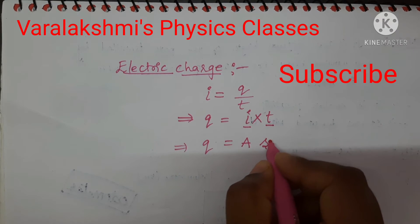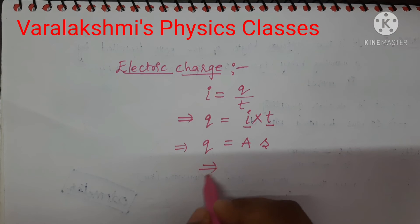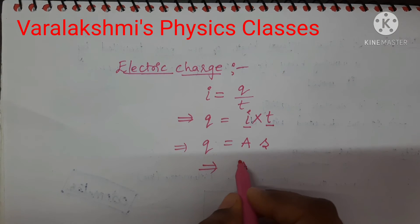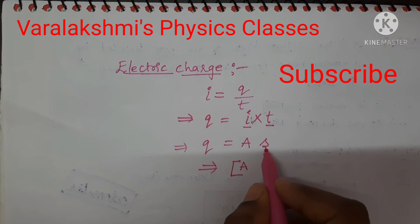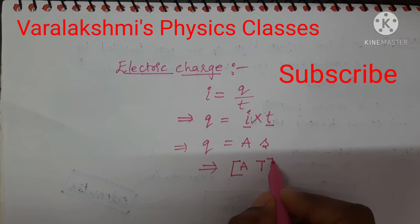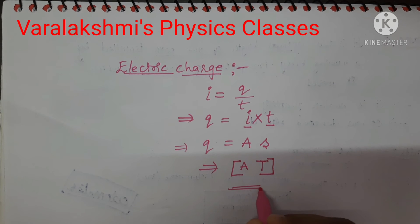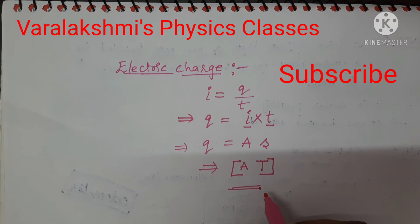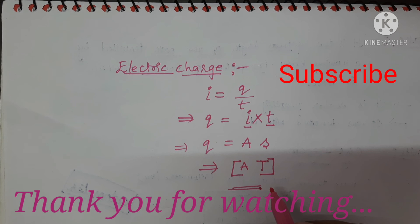Now write the dimensions: current is expressed in terms of A, and second is expressed in terms of T. This is the dimensional formula for electric charge.